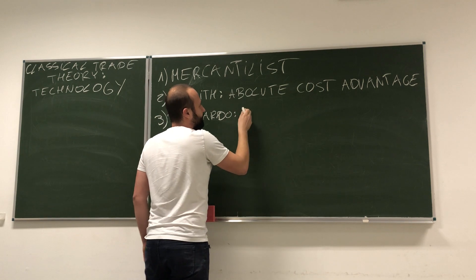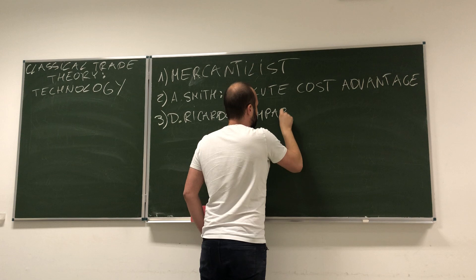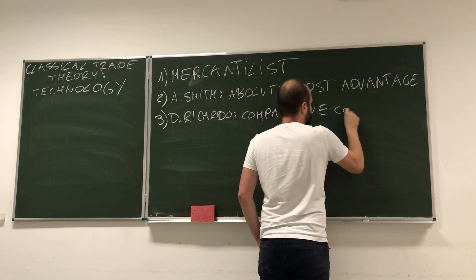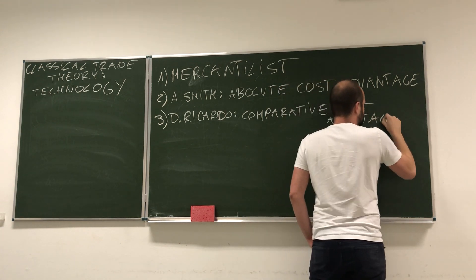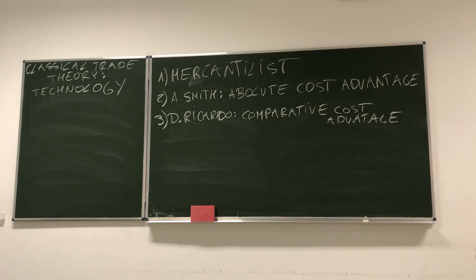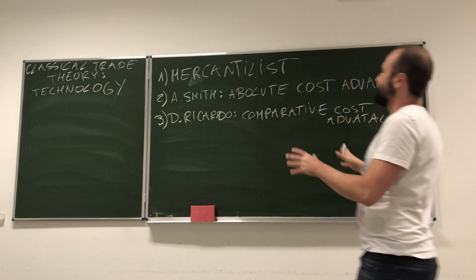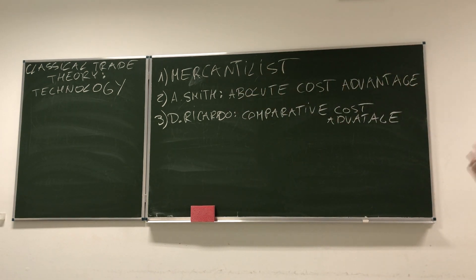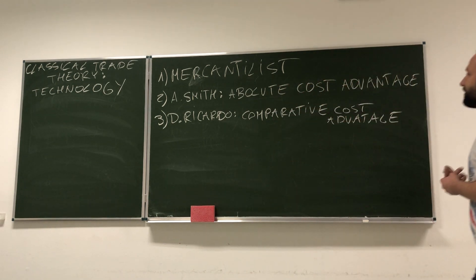A theory called comparative, based on comparative cost advantage. And this theory is what we're actually going to start with. We're going to start with this theory because it's the most basic, but still relevant, theory explaining the nature of trade-flow we observe in the economy.